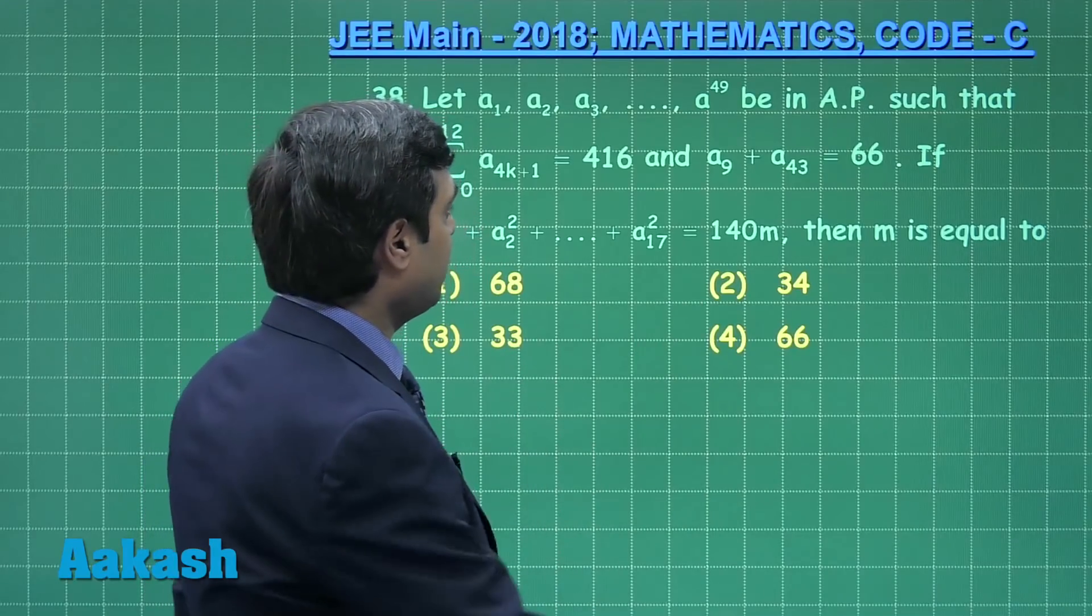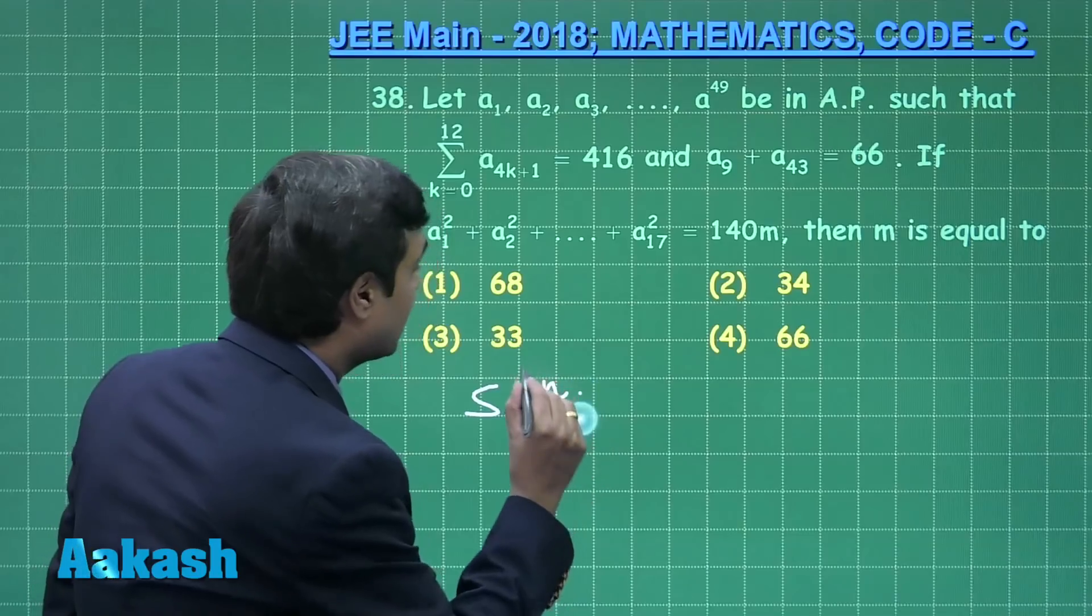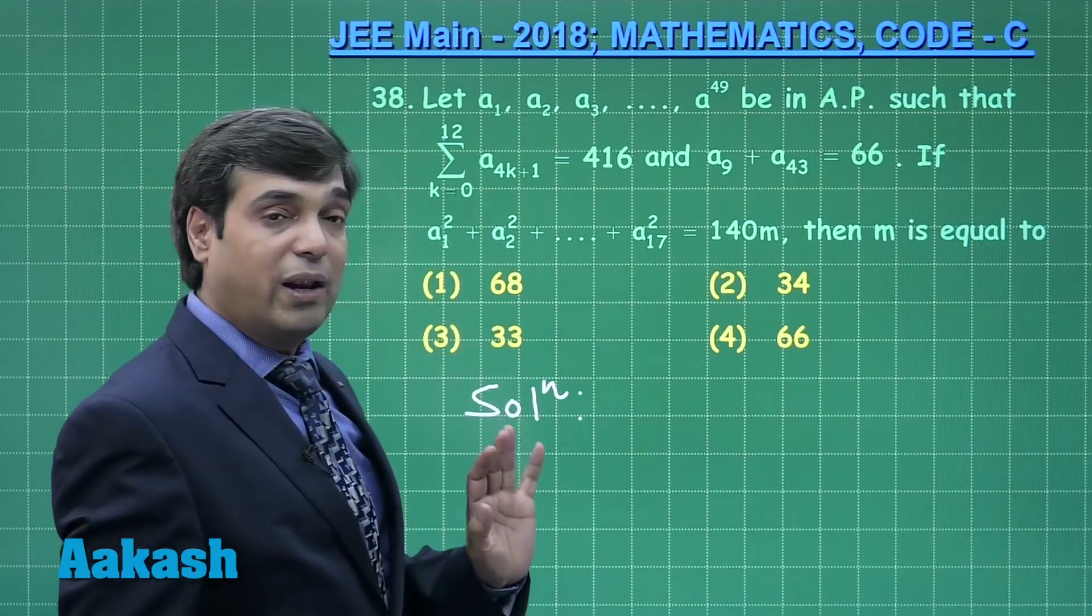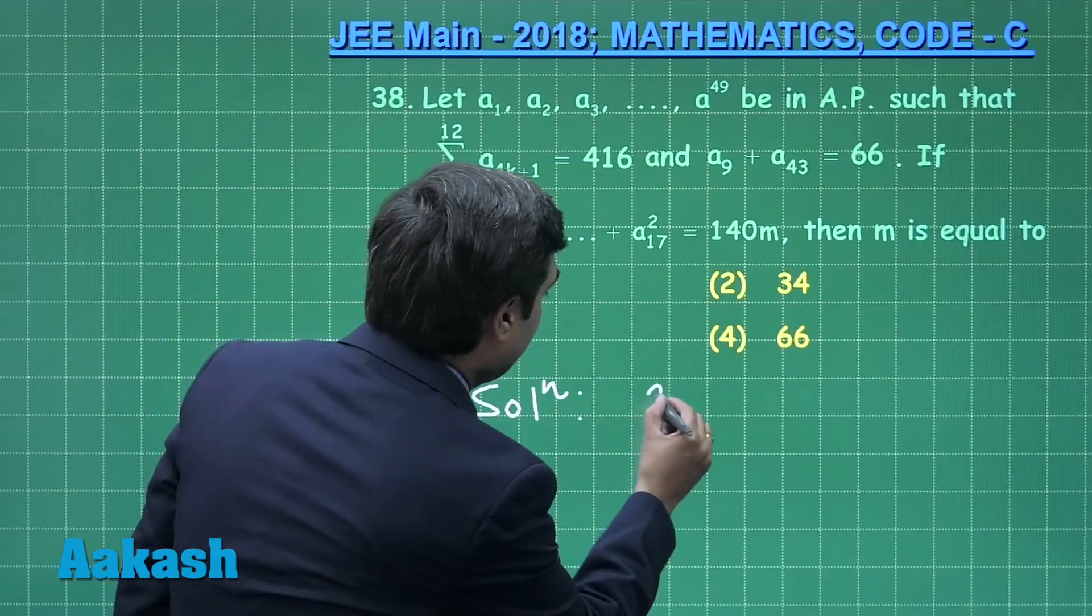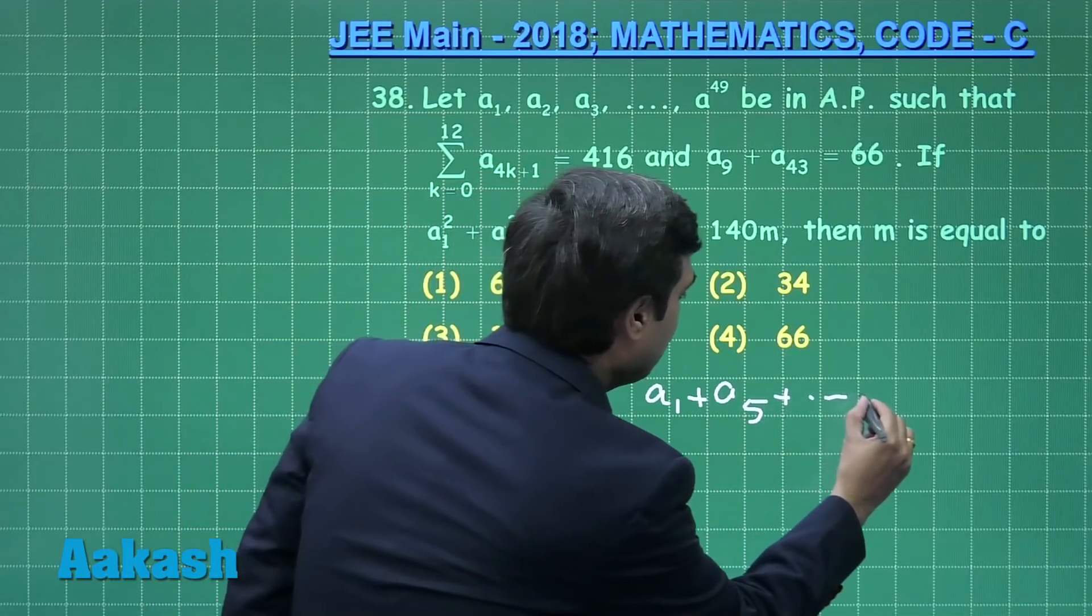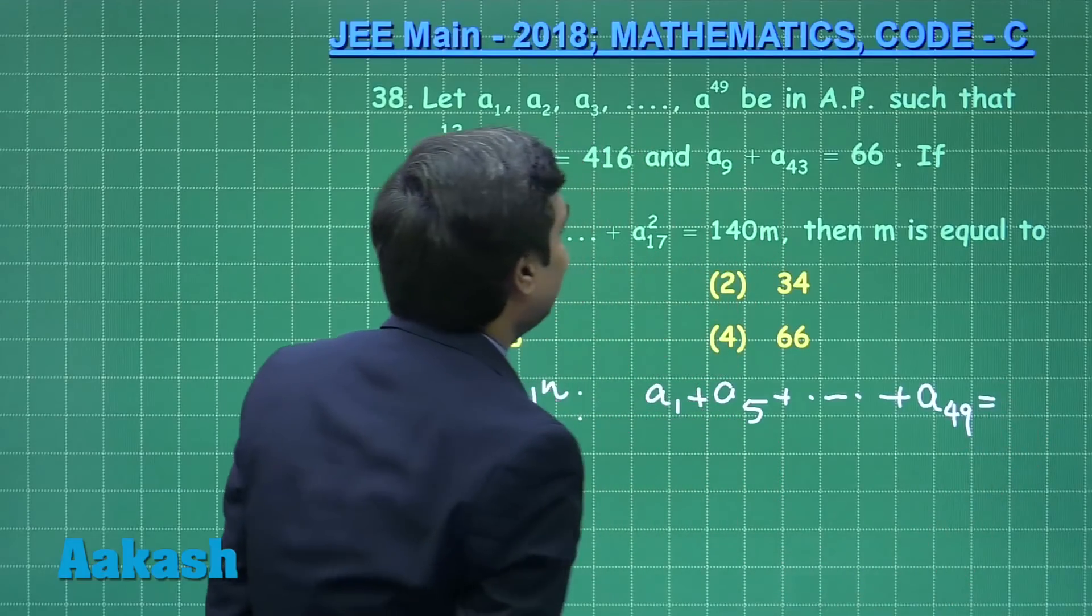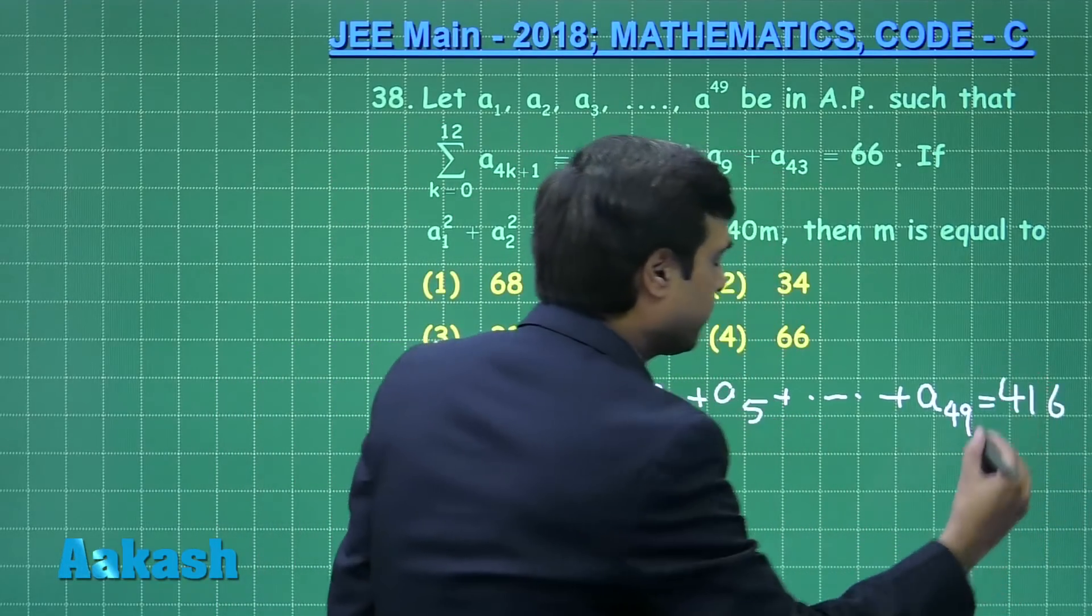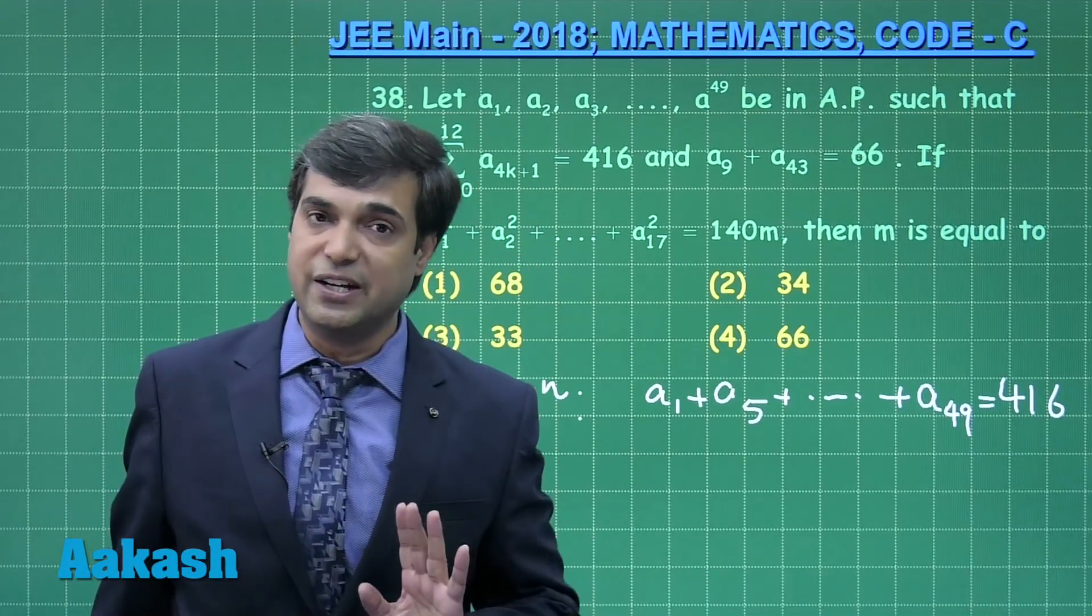Simple question from arithmetic progression. We can start solving it as summation k equals 0 to 12, that is sum of 13 terms, which are a₁ + a₅ and so on up to a₄₉ is equal to given to me 416. Let us consider the A.P. as a, a + d, and so on.